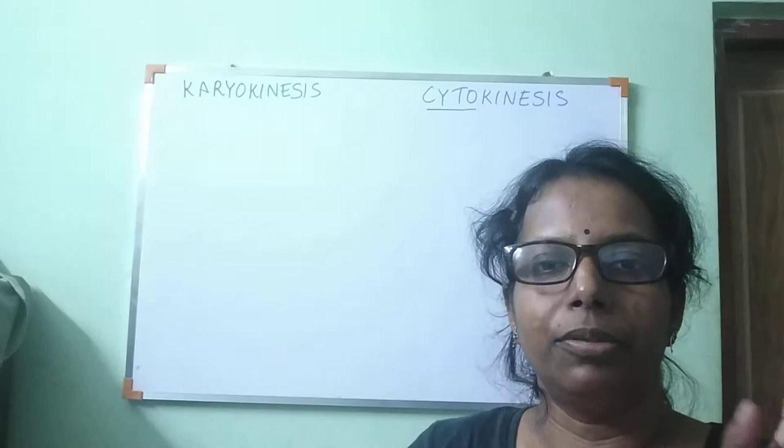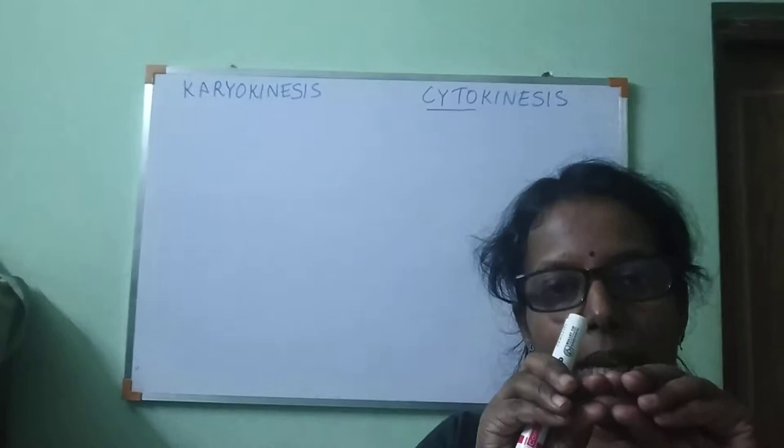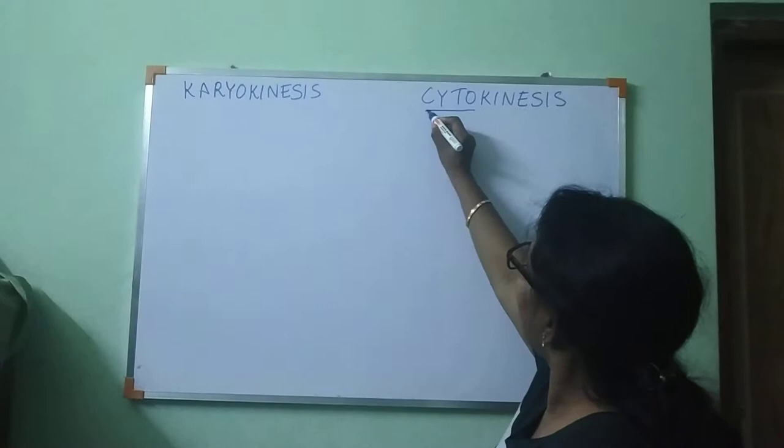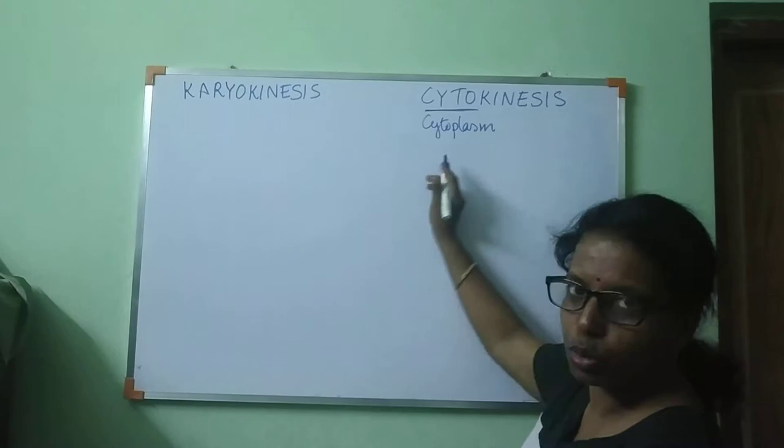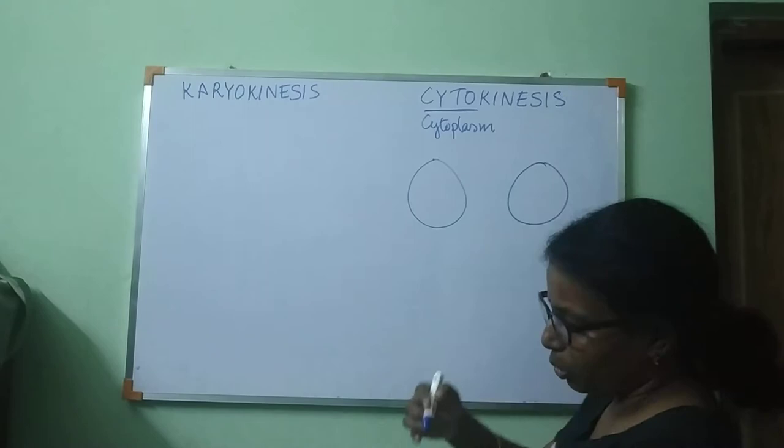After the four phases of mitosis are over — prophase, metaphase, anaphase, and telophase — what happens next is the genetic material or DNA has divided. Now it is time for the cytoplasm to divide. Cyto means cytoplasm, and kinesis means to divide. So the two new cells are formed.